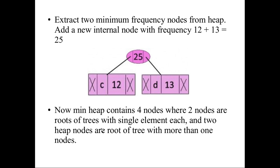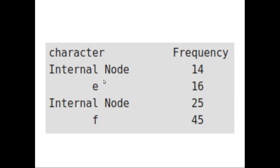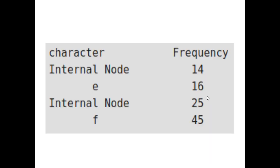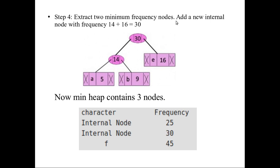Now the minimum heap contains four nodes — two nodes are root nodes of trees with single elements and two heap nodes are trees with more than two elements. E and f are with only single elements and the other two have more than two elements. Again extract the two minimum frequency nodes: 14 and 16. 14 is already an internal node we created. The smaller one, 14, goes to the left side and 16 goes to the right side. Now the minimum heap has three nodes: 25, 30, and 45 according to frequency.